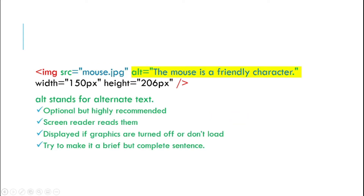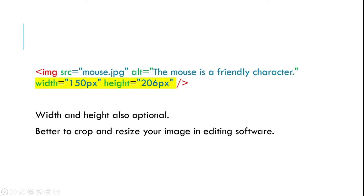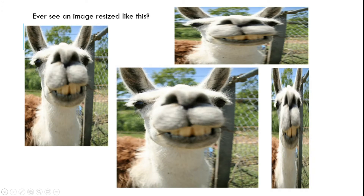The next part of the image tag is the alt text, which stands for alternate. We should always include this so that we are handicap accessible — screen readers will use that, and it will also display if your graphic doesn't load. Try to make it a really short but complete sentence. Then width and height are optional. If you want to resize your image, it is better to do it inside of image editing software, because if you stretch it in one direction instead of keeping the ratios the same, your image is going to look a little funky.